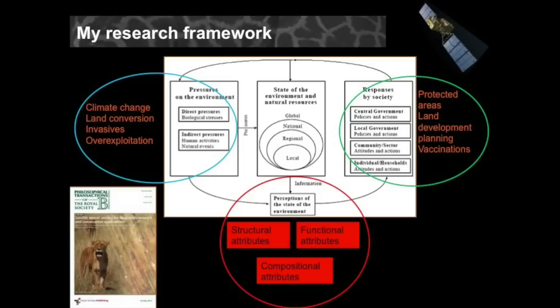The framework is the pressure-state-response. Looking at how pressures such as climate change, land conversion, invasive species, or overexploitation affect the state of the environment in terms of structural, functional, or compositional attributes, and how different types of responses — whether setting protected areas, informing future planning for land development, or thinking about reintroduction — can or cannot contribute to improving the situation. I do that mostly using satellite data. We had a nice field trumps issue last year presented using that kind of framework.